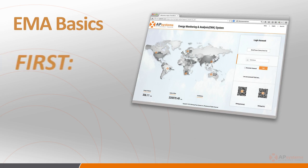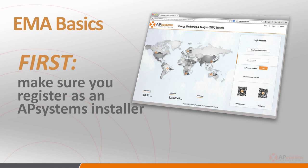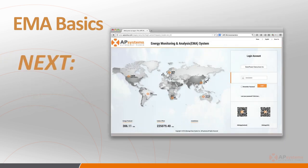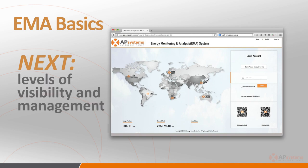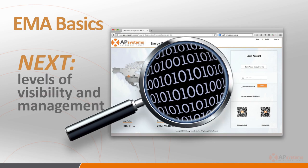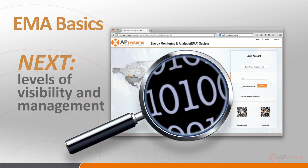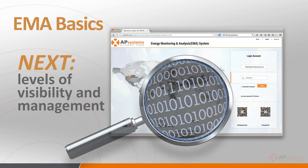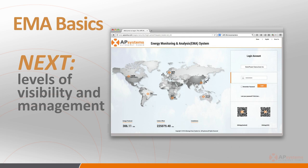First and foremost, as we've already stated and you'll hear as a recurring theme throughout all of our training, the EMA is accessible to you and your customers only after you've registered and have an AP Systems EMA Installer account. It should be noted that you and your customers have different levels of visibility into the system's data and management functionality. While your customers can view overall system performance, you'll have the ability to query their systems at a much deeper level.